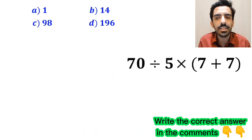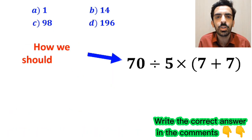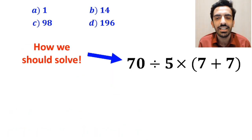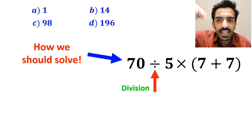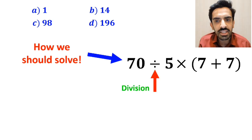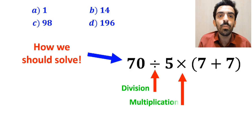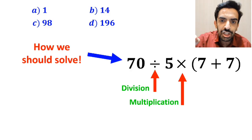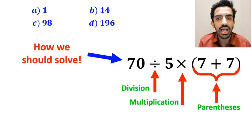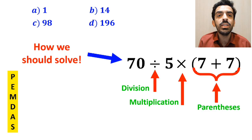Now, let me explain step by step how we should solve this expression properly. As you can see on the screen, in this expression we have a division sign, followed by a multiplication sign, and then parentheses. To solve this question, we need to use the PEMDAS rule.